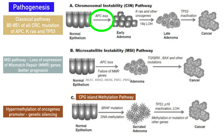The third pathway is known as the CpG island methylation pathway, related to hypermethylation of gene promoters that cause genetic silencing or loss of protein expression, for example in the case of BRAF gene mutation.